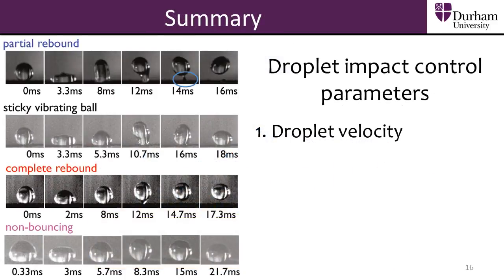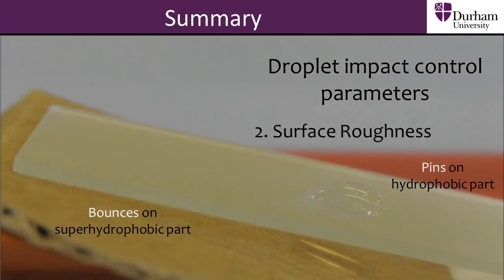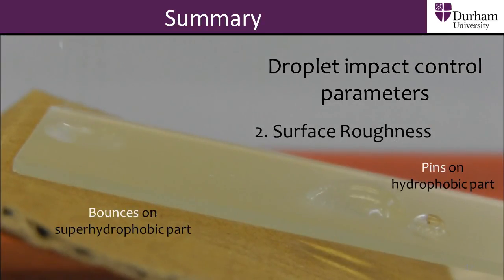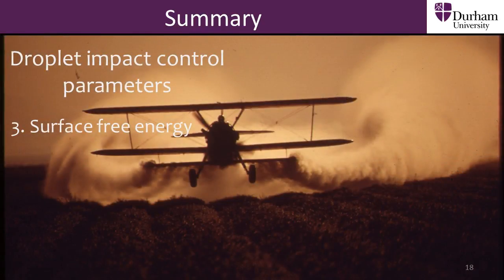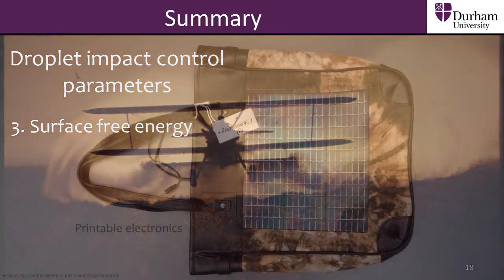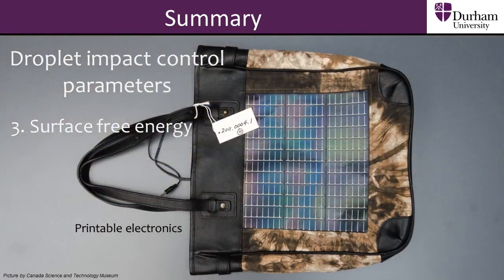In this section we have discussed the effects of different impact parameters. We have also seen why it is important to control these parameters in the cases of some real-world applications, such as crop spraying and in the printing and technology industries.